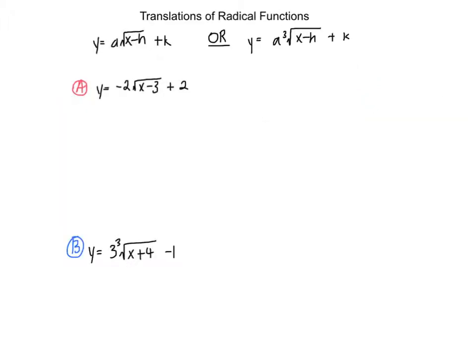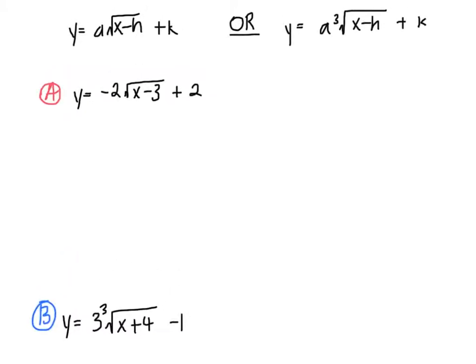So translations are radical functions. We have once again our standard form, in which h and k are the vertical and horizontal translations. So first we have our problem which is y equals negative 2 times the square root of x minus 3 plus 2.